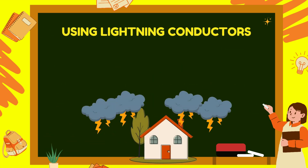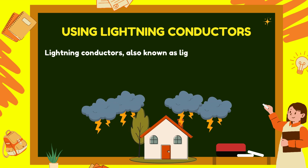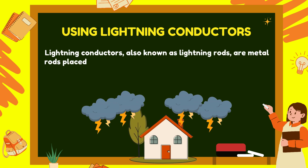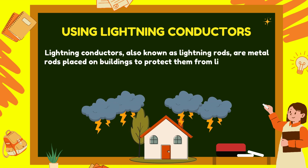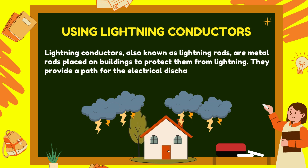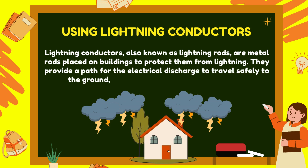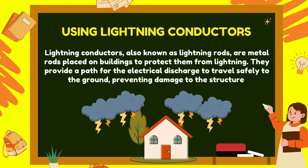Using lightning conductors: Lightning conductors, also known as lightning rods, are metal rods placed on buildings to protect them from lightning. They provide a path for the electrical discharge to travel safely to the ground, preventing damage to the structure.